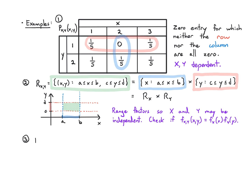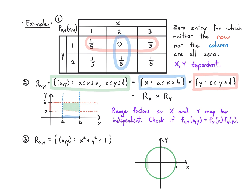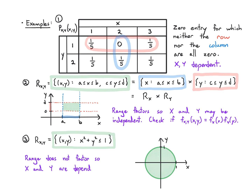In contrast, if the range is a circle — for example, x² + y² ≤ 1 — it cannot be written as a rectangle, so the range does not factor. We immediately conclude that X and Y are dependent without even looking at the joint PDF. Whereas with the rectangular range in example two, we would have to go and check whether the function itself factors.